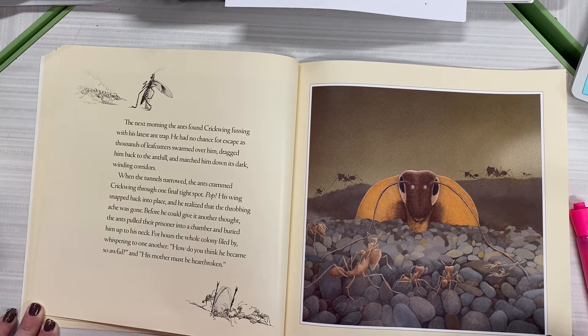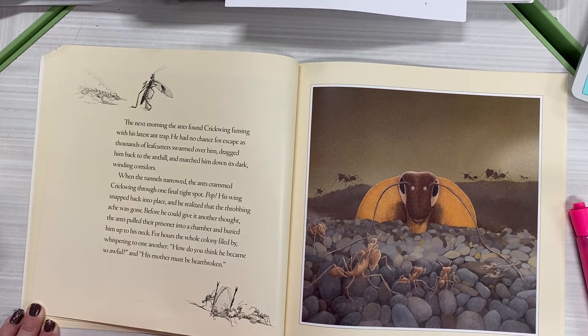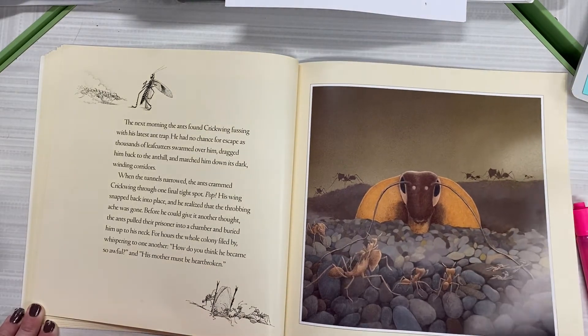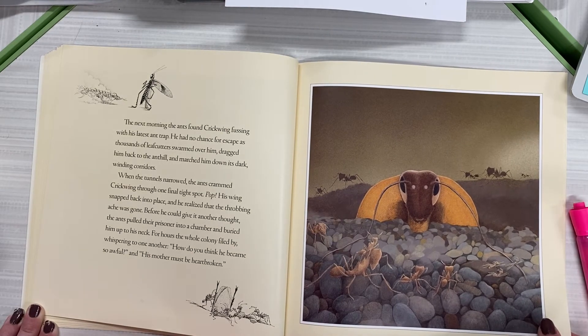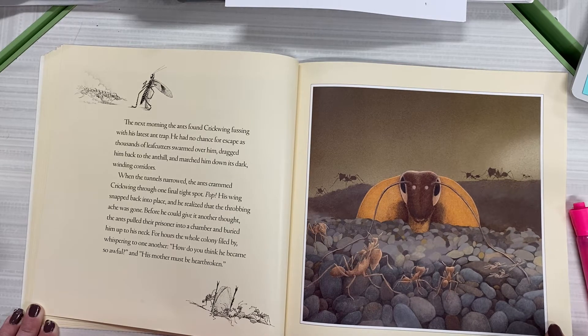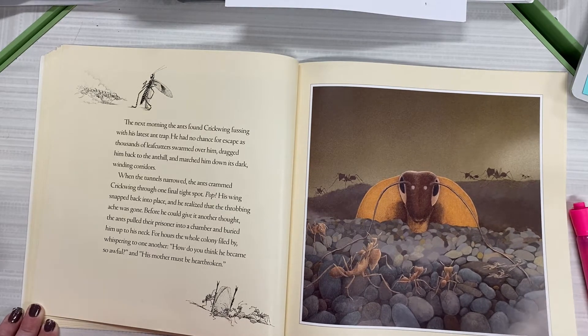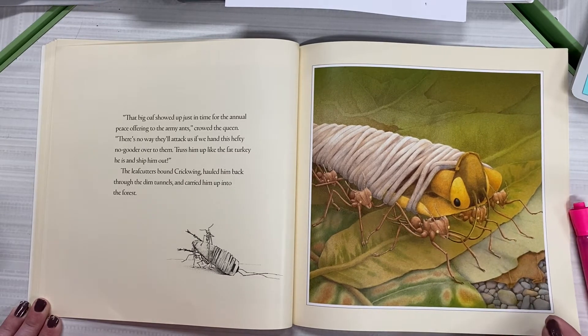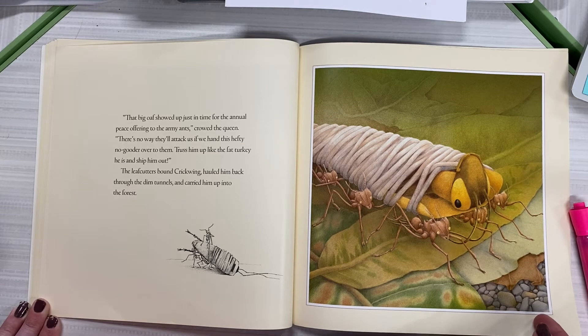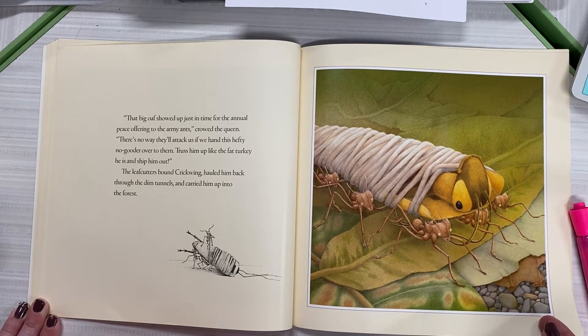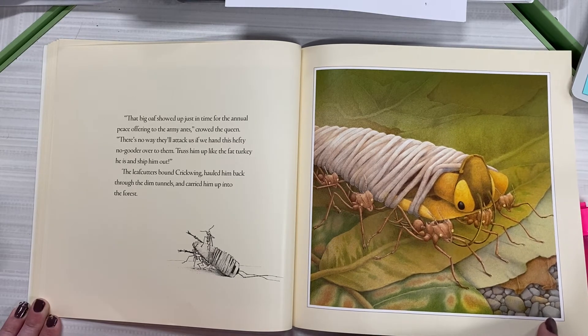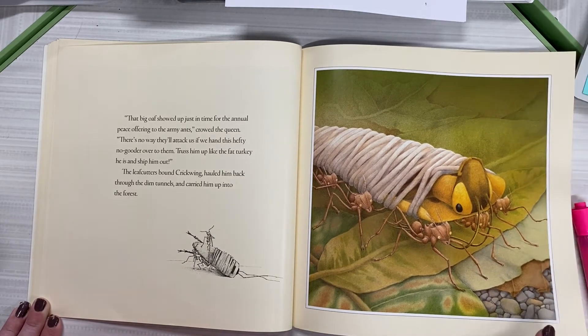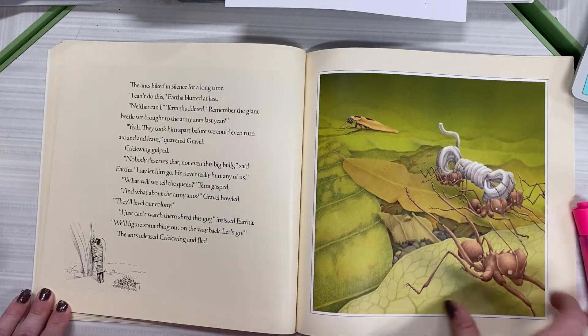The next morning, the ants found Crickwing fussing with his latest ant trap. He had no chance for escape as thousands of leaf cutters swarmed over him and dragged him back to the ant hill and marched him down its dark winding corridors. When the tunnels narrowed, the ants crammed Crickwing through one final tight spot. Pop! His wing snapped back into place and he realized that the throbbing ache was gone. Before he could give it another thought, the ants pulled their prisoner into a chamber and buried him up to his neck. For hours, the whole colony filed by, whispering to one another, how do you think he became so awful? And his mother must be heartbroken.